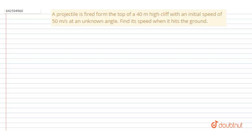from the top of a 40 meter high cliff with the initial speed of 50 meter per second at an unknown angle. Find the speed with